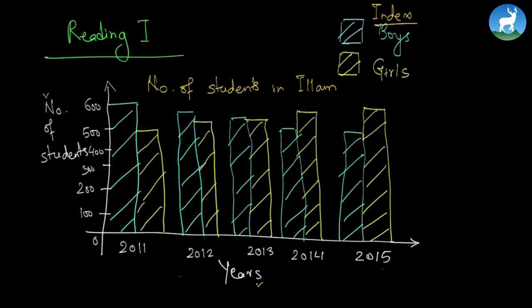This is what we have as an index of the bar diagram. The above bar chart illustrates the comparison between the different numbers of boys and girls studying in a public school in Elam.